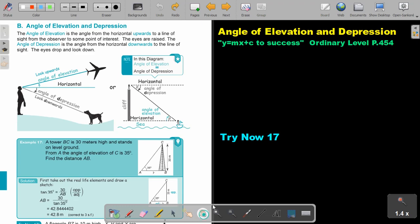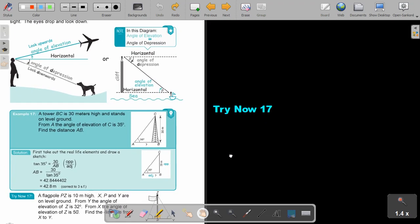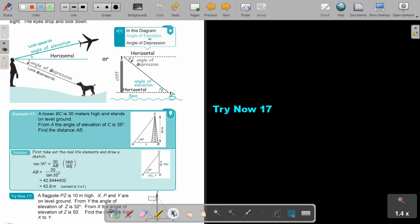Let's look at an example. A tower BC is 30 meters high and stands on level ground. From A, the angle of elevation of C is 35. Find the distance AB. So I just make a sketch out of the practical situation. I'm still going to use my 90 degree triangles because I sit with an angle there of 90 degrees.